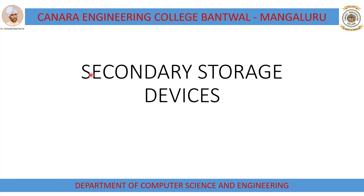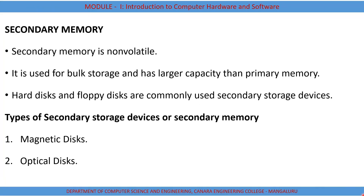In this lecture we will discuss about secondary storage devices or secondary memory. Secondary memory, also known as auxiliary memory or external memory, is a non-volatile memory. Whatever data is stored in the secondary memory is non-volatile, meaning it can be stored permanently even if the power is turned off — the data will not be lost.